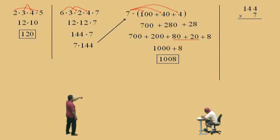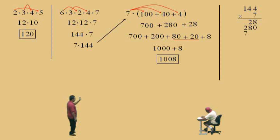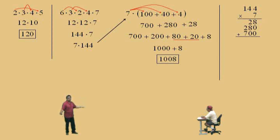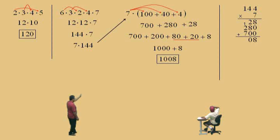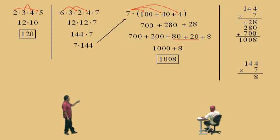Now using the vertical format: 144 times 7. 7 times 4 is 28 — write 8, carry 2. 7 times 4 is 28, plus 2 is 30 — write 0, carry 3. 7 times 1 is 7, plus 3 is 10. So you're adding 28 plus 280 plus 700, which gives you 1,008.